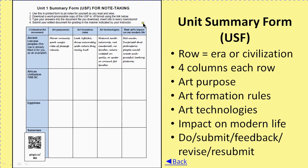The written homework — the unit summary form — is a way to collect information that you're going to find useful for the essay. There's one of these for each unit, and they each have the same format. Each row is a given civilization or era. For example, the ancient Lascaux peoples covered first in chapter one of The Story of Art. I've given you sample entries so that everybody has correct information for Lascaux, and because in the middle of the term I'd like you to write the first page of your reflective essay based on this information.